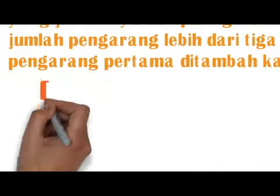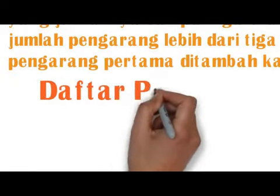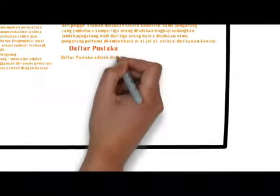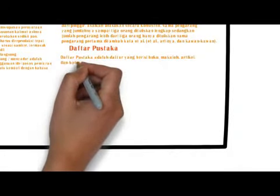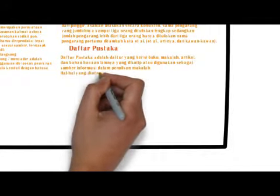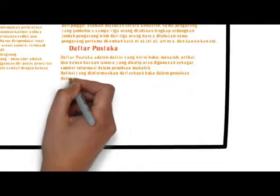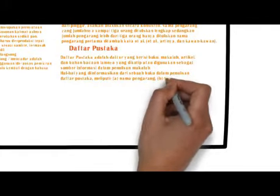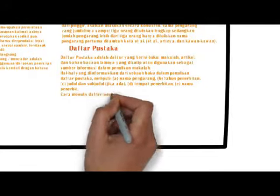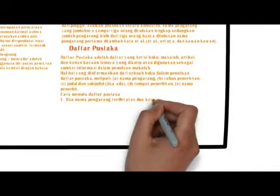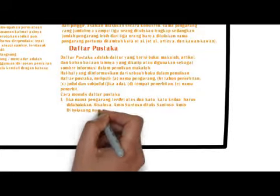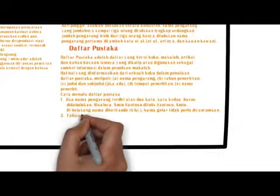Daftar Pustaka adalah daftar yang berisi buku, makalah, artikel, dan bahan bacaan lainnya yang dikutip atau digunakan sebagai sumber informasi dalam penulisan ilmiah. Hal-hal yang diinformasikan ialah nama pengarang, tahun penerbit, judul dan subjudul, tempat penerbitan, dan nama penerbit. Teknik menulisnya: pertama, jika nama pengarang terdiri atas dua kata, kata kedua harus didahulukan, di belakang nama diberi titik. Kedua, tahun penerbit buku diakhiri tanda titik.